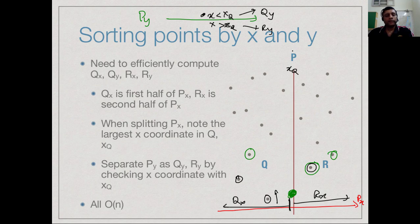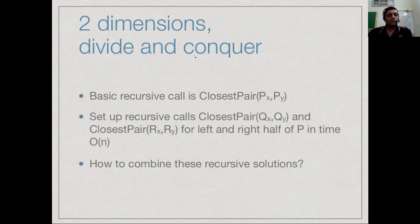In linear time we can take the sorted lists Px and Py and separate them into Qx, Qy for the left half and Rx, Ry for the right half. So we call our algorithm with ClosestPair(Px, Py), which splits recursively into ClosestPair(Qx, Qy) and ClosestPair(Rx, Ry) for the left and right halves. We can assume these are solved recursively, giving the closest distances for each half.